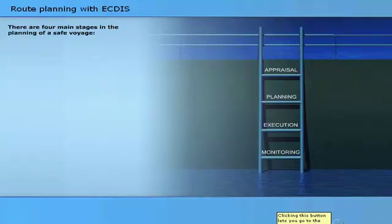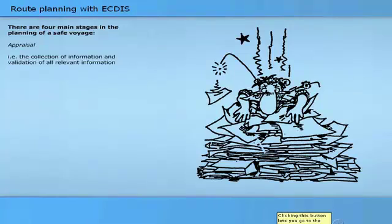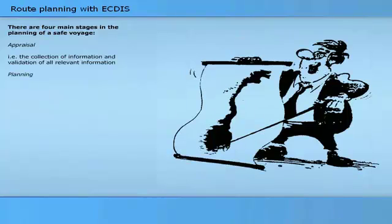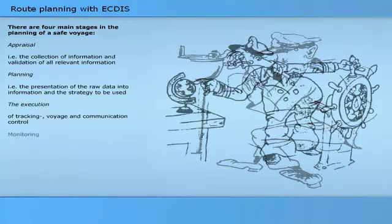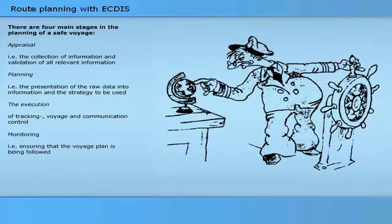There are four main stages in the planning of a safe voyage. First, appraisal — the collection and validation of all relevant information. Second, planning — the presentation of raw data into information and the strategy to be used. Third, execution — tracking the voyage. Fourth, monitoring — ensuring that the voyage plan is being followed.